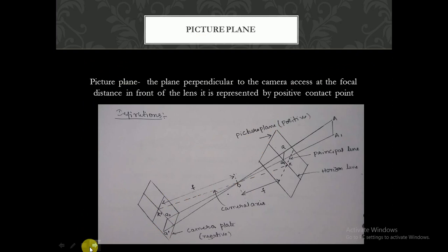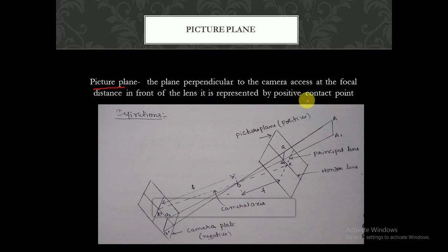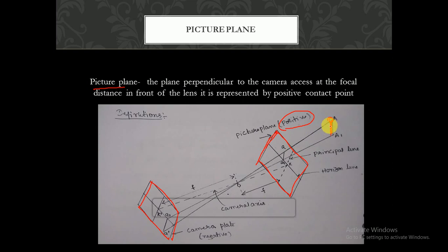Picture plane: it is perpendicular to the camera axis at a focal distance in front of the lens. It is represented in terms of a positive contact point. This is the plane where the image is formed — the focusing is done from here and the image gets formed on the camera plate, that is the picture plane.